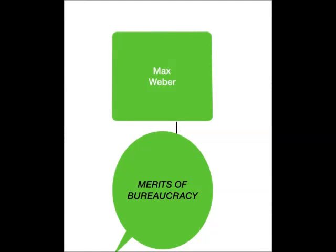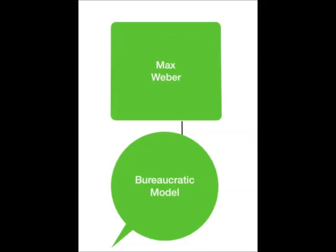Bureaucracy works on six principles: task specialization, hierarchical authority, formal selection, rules and requirements, impersonal interactions, and career orientation.